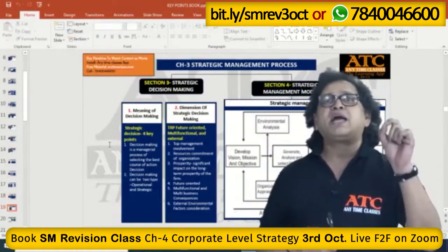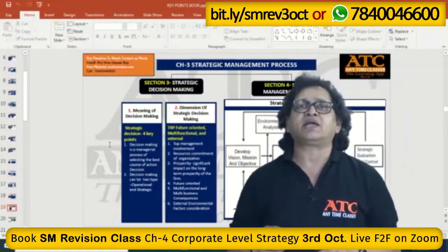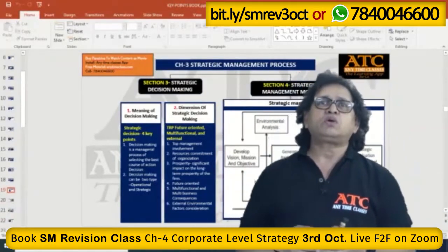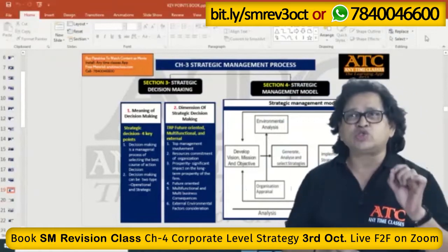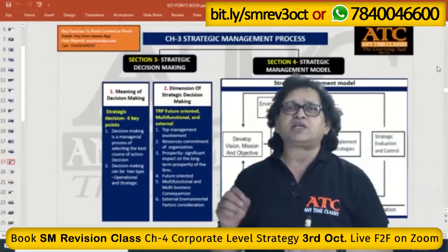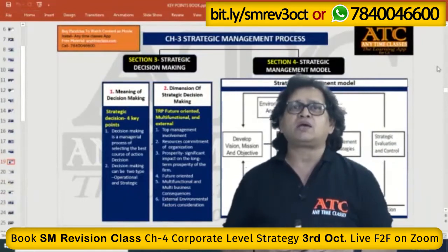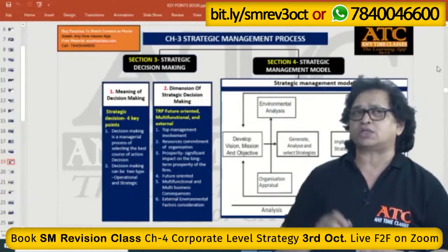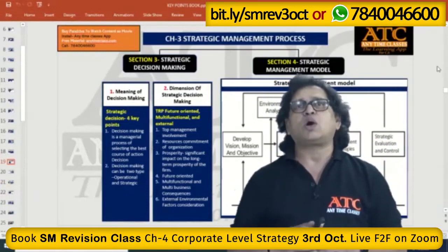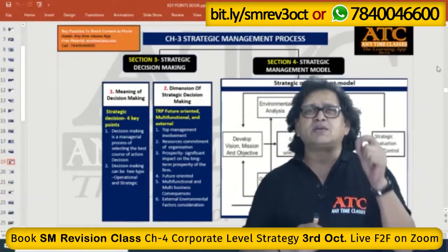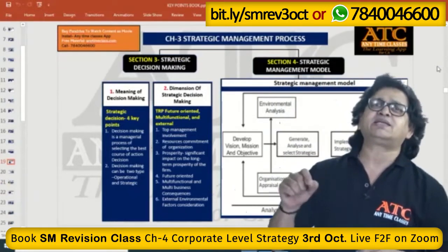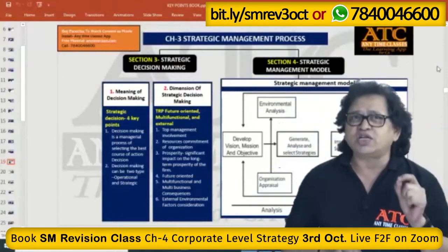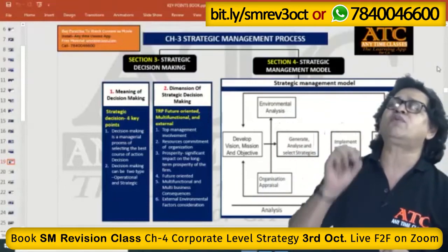The first keyword is: decision making is a managerial process of selecting the best course of action. The second point is that decision making can be two types — operational and strategic. Decision making is a managerial process of selecting the best course of action.